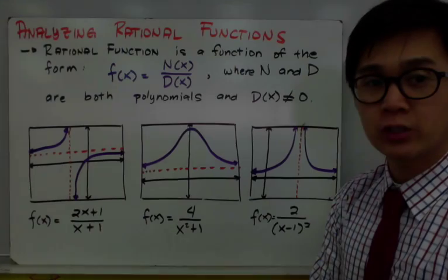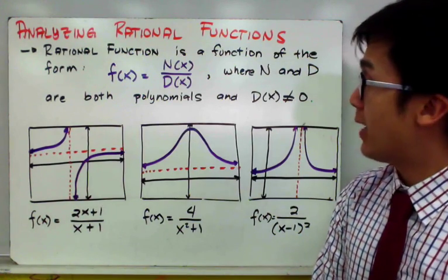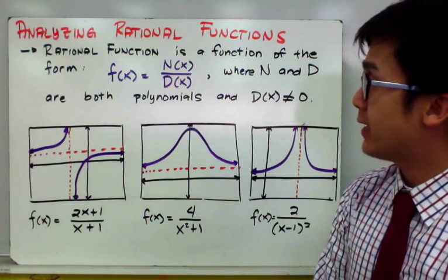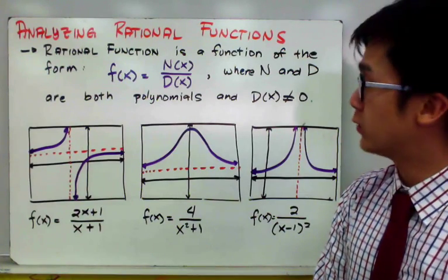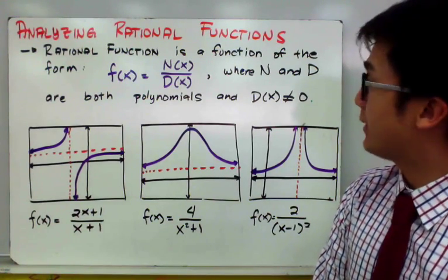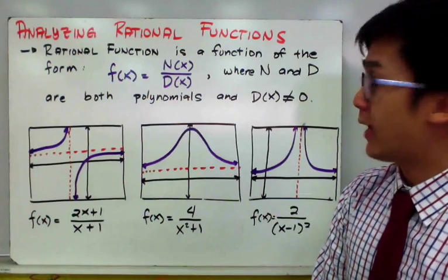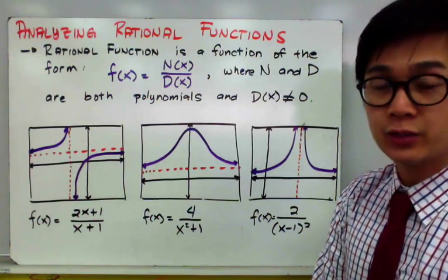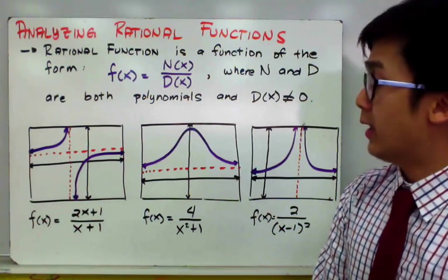By definition, rational functions are functions of the form f of x is equal to n of x all over d of x, where n and d are both polynomials, and d of x should not be equal to 0.